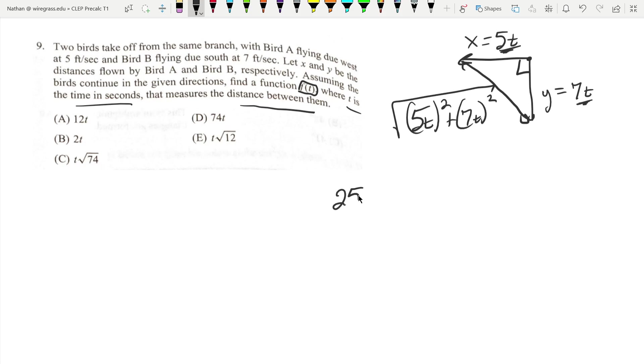That's going to give us 25 t squared plus 49 t squared. That's the same thing as 74 t squared. Then we can break up the radical. Square root of 74 times the square root of t squared is just t. And that is answer C.